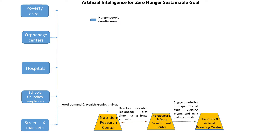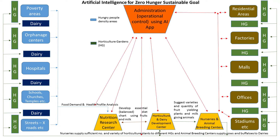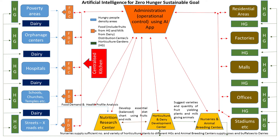The Horticulture Center suggests varieties and quantities of fruit-yielding plants to nurseries. The Dairy Development Center suggests milk-giving animals to animal breeding centers. Nurseries supply sufficient numbers and varieties of horticulture plants to different horticulture gardens, and animal breeding centers supply cows and buffalos to dairies. A developed AI app, collecting real-time information from different locations, helps in establishing and managing food distribution centers.